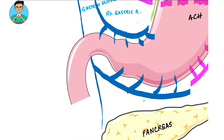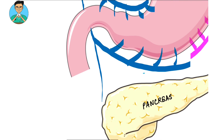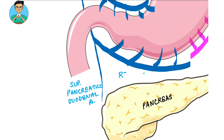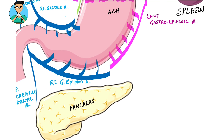The gastroduodenal artery moves down and divides into two branches. One branch moves towards the superior part of the pancreas and duodenum, and hence is known as the superior pancreaticoduodenal artery. The other branch moves along the lower part of the greater curvature of the stomach and is known as the right gastroepiploic artery, which anastomoses with the left gastroepiploic artery.